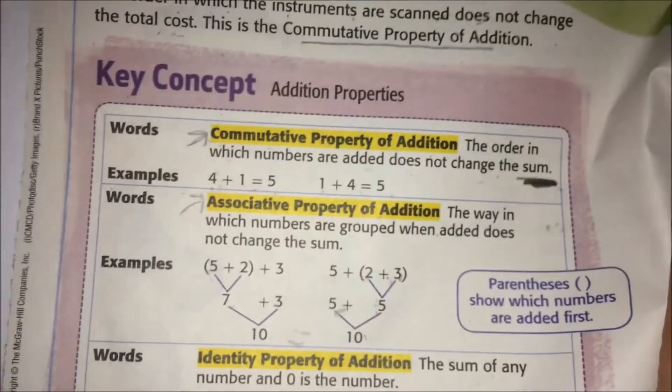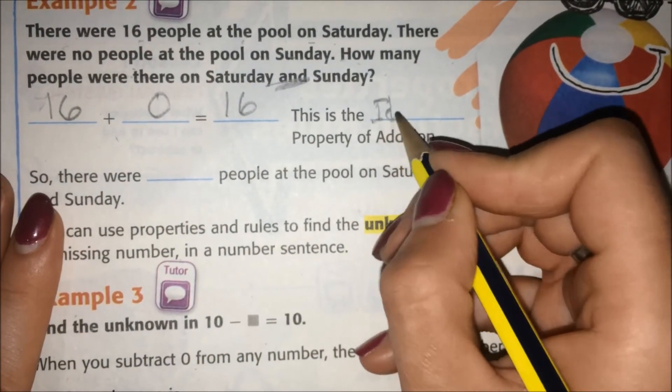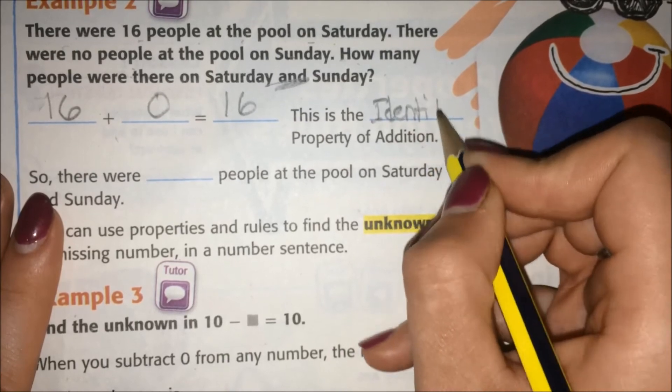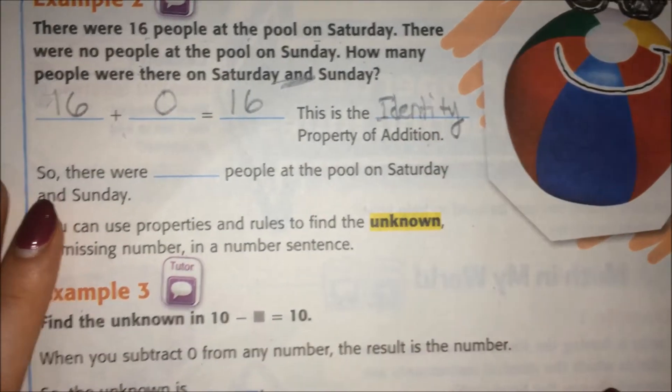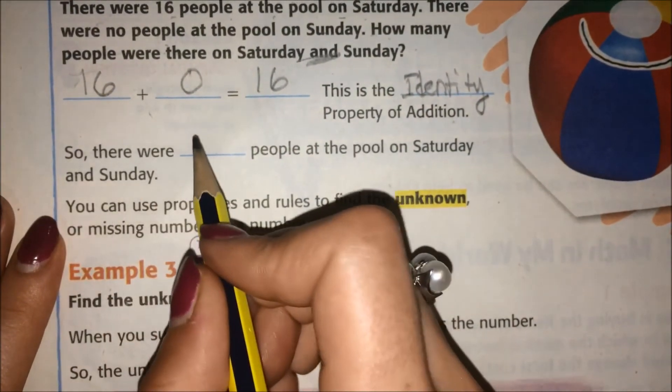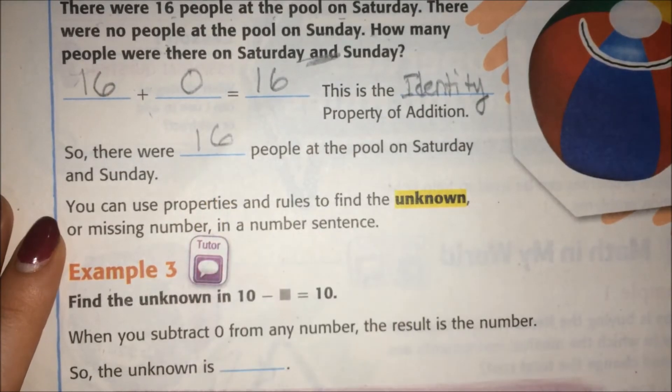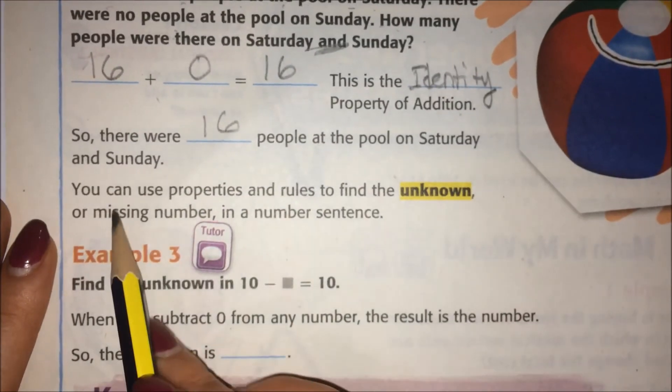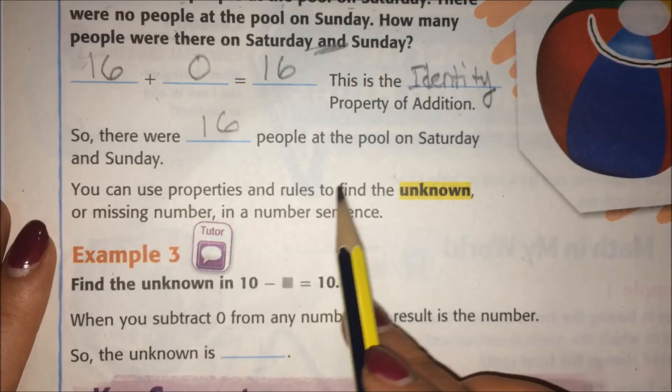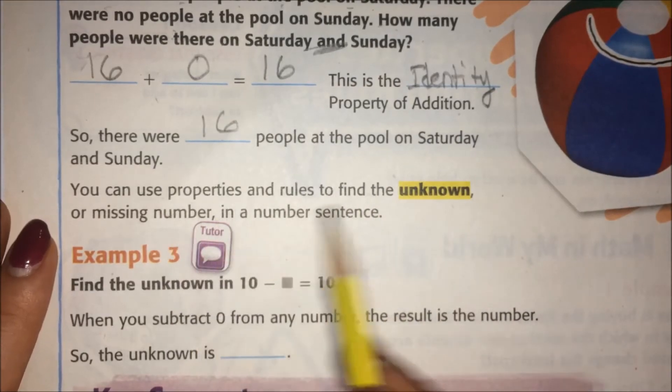So the answer is sixteen. Which property is this? It is the identity property. So we can write identity. So there were sixteen people at the pool on Saturday and Sunday.